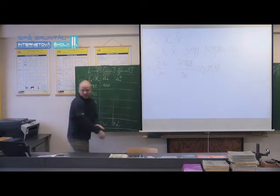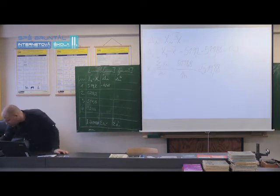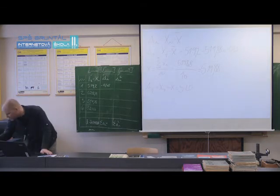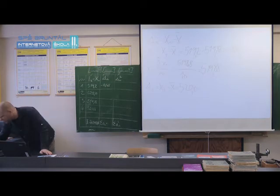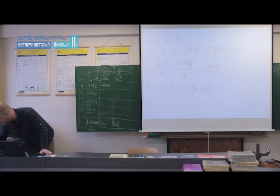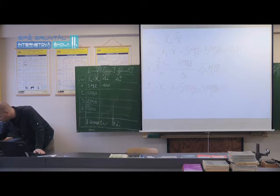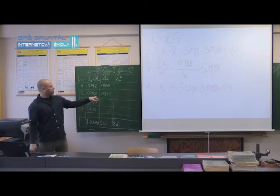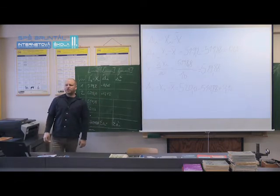Now I can calculate delta i. 519.2 minus těch 519.88. What is the result when you subtract these two numbers? Minus 0.68. What is delta 2? Delta 2 is calculated as x2 minus x̄. So what is it? 520.0 minus the arithmetic mean, which is 519.88. It equals what? 0.12. Plus or minus?